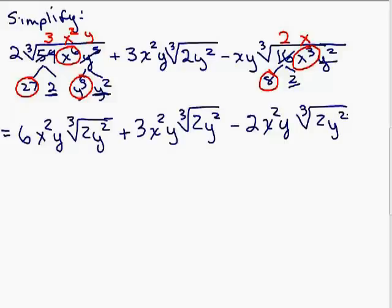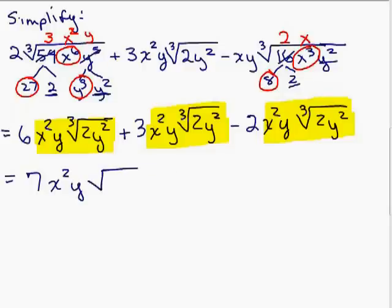Now we look and see, do we have like terms here? So for this first one, I've got x squared y cube root to 2 y squared. In fact, let's see. If I highlight this, it might be even easier to see. Look at the variable part with the radicals. It's exactly the same. So all I do is add the coefficient 6 plus 3 minus 2. So that's 9 minus 2 is 7. And then you just write the variable part down. X squared y cube root of 2 y squared.